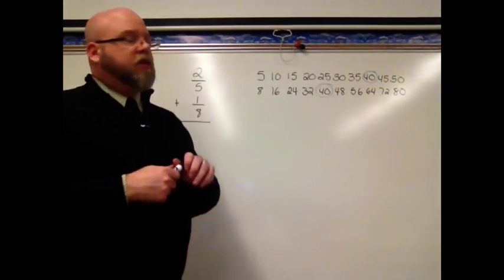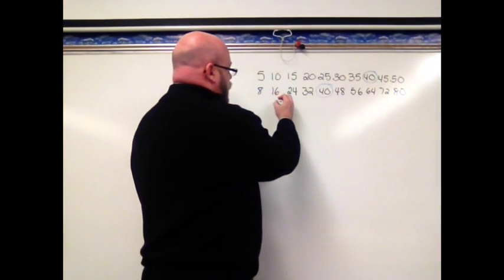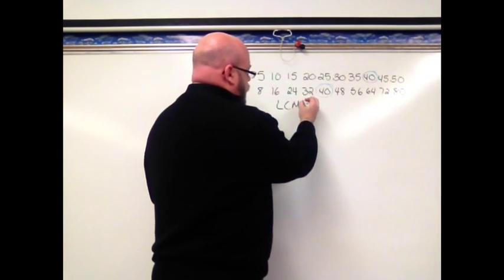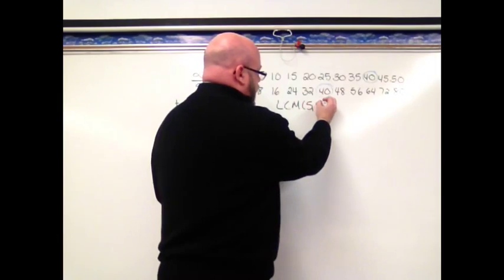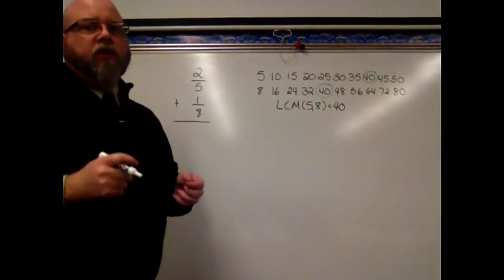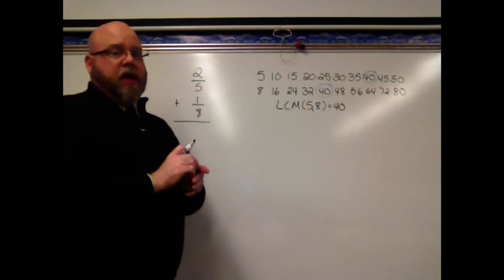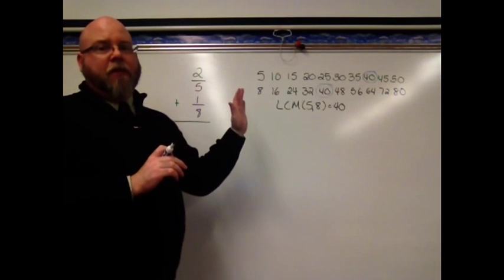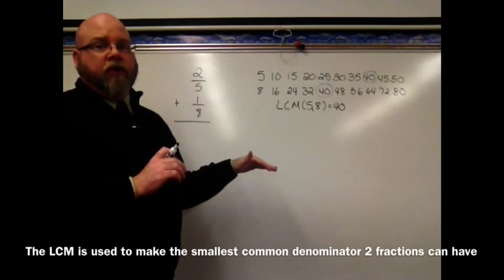5 and 8 have 40 in common as a multiple. We call this the least common multiple. So we would say the least common multiple of 5 and 8 is 40. Well, we can use the least common multiple, then, to make the least common denominator so that we can add and subtract our fractions.